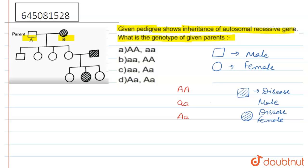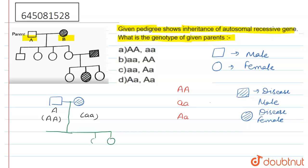Now, this male is married to this female. The female is having the disease, so we can label her as small a small a. This parent is capital A capital A. When they both marry and produce new offspring, the new offspring are: first one is female, second is also female, third is also female, and the fourth one is male.